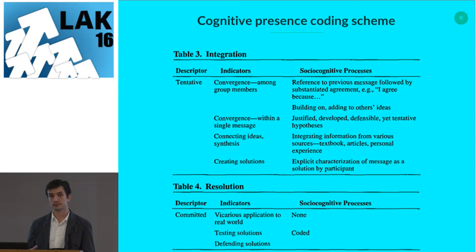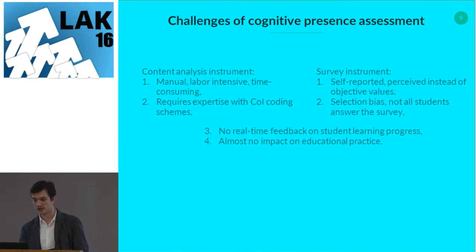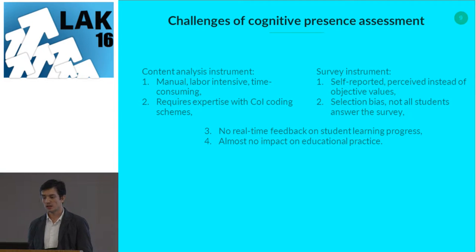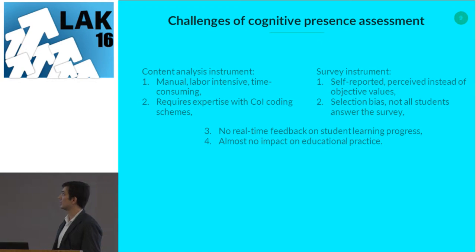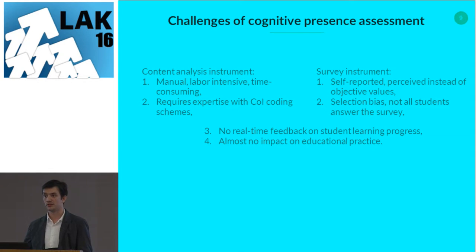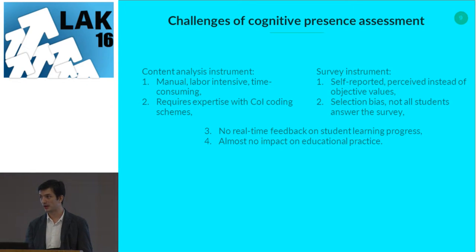These descriptions are very concise and not very detailed, so they require real expertise to apply. Challenges of assessing cognitive presence: using a coding scheme is labor-intensive and requires expertise; using a survey instrument gives self-reported data with selection bias. Both have the problem that you can't get feedback on learning progress while the course is running — you can only use them for research after the course is over. Most coding schemes have had very little impact on practice.